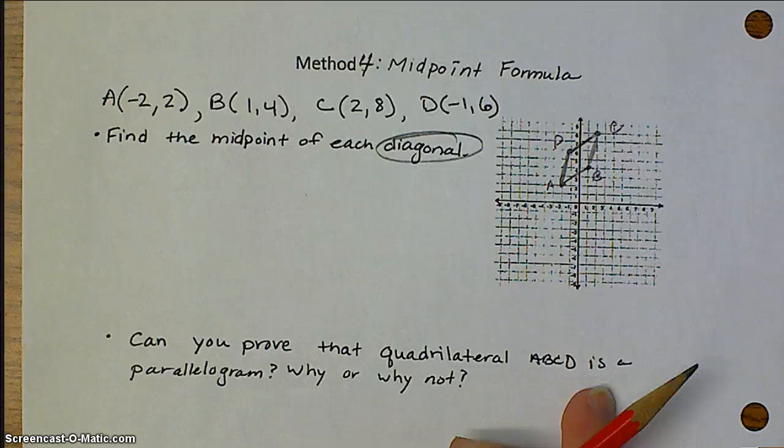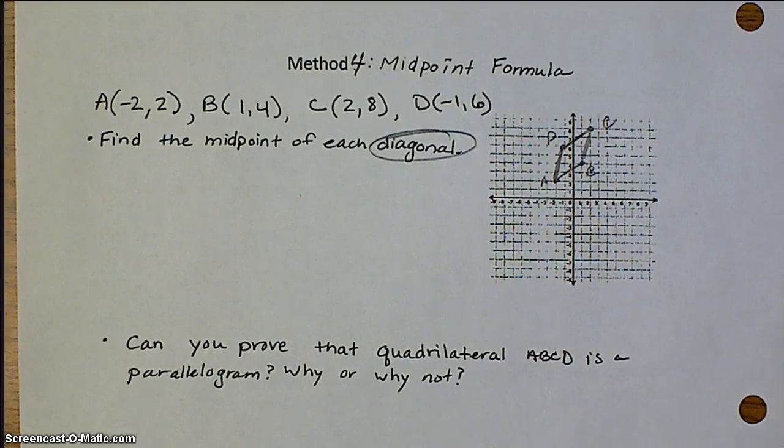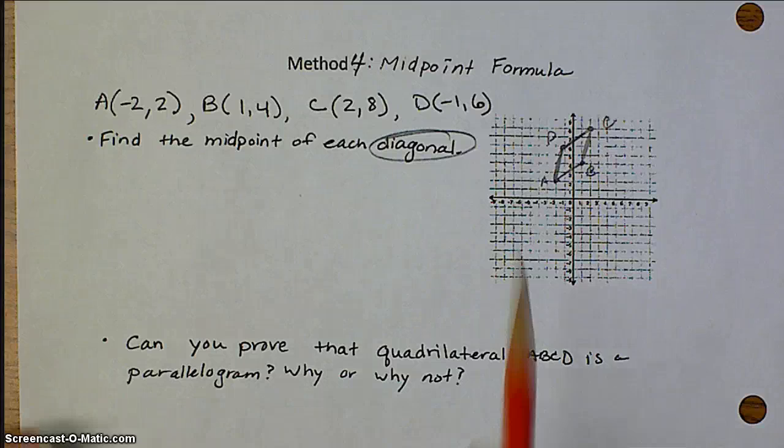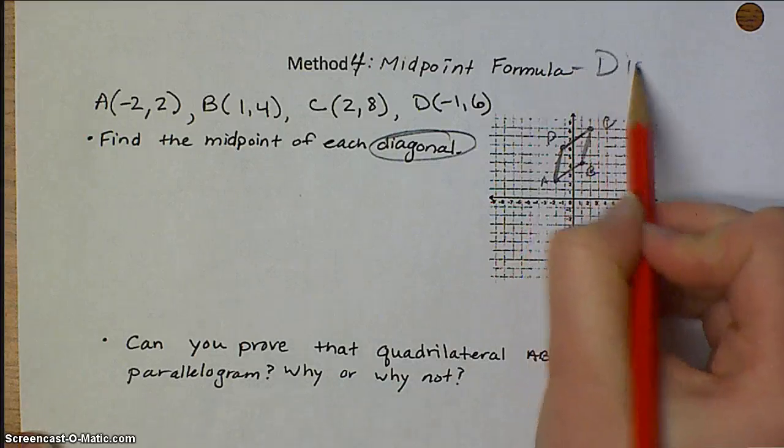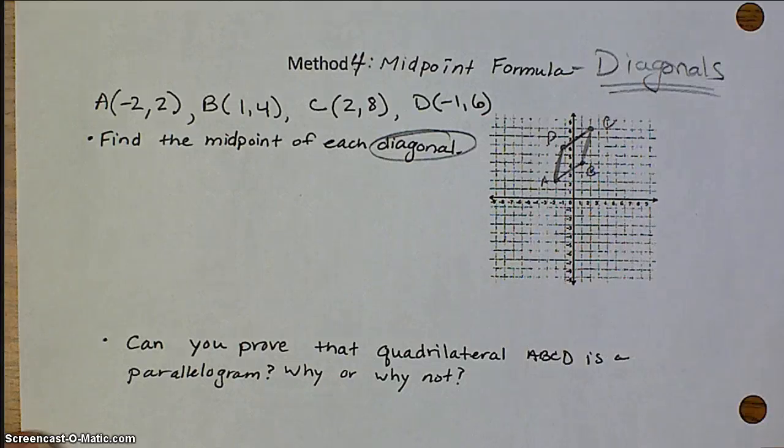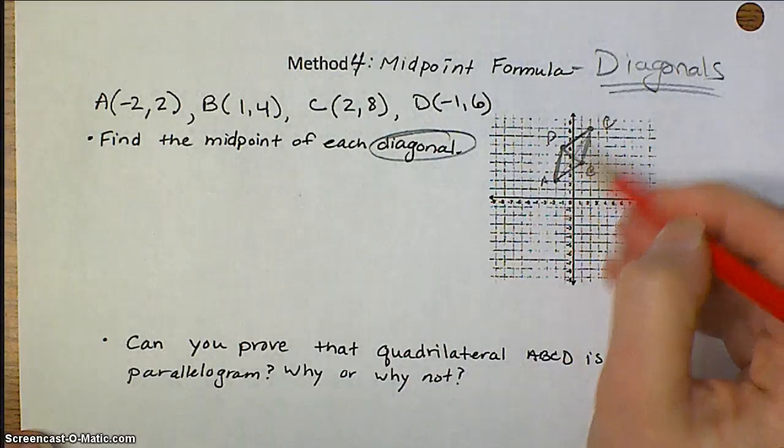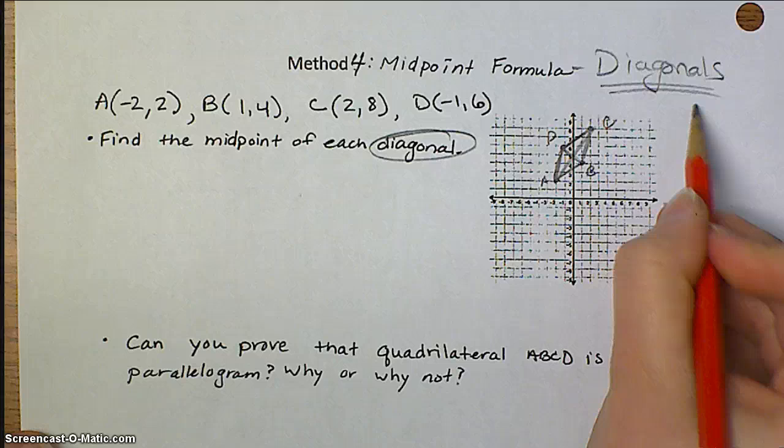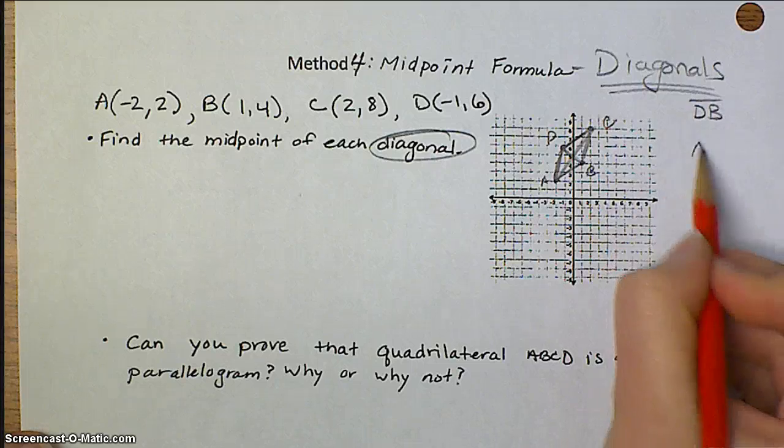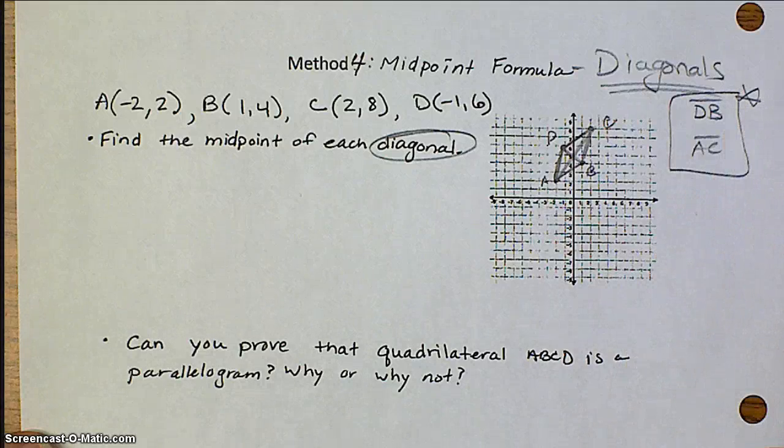Method number 4 is a little bit different. This one's a lot shorter, so I think most of you will like this method. But make sure you make a note that you can only use the diagonals for this method, none of the sides. So it might be a good idea to quickly sketch your points and then fill in the diagonals. So my diagonals in this case are DB and AC. That's important to know.